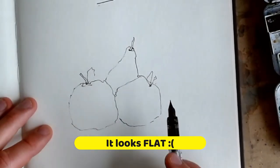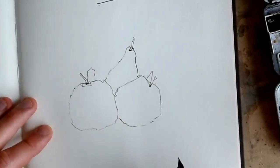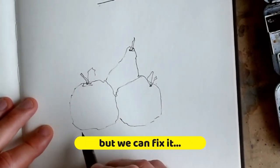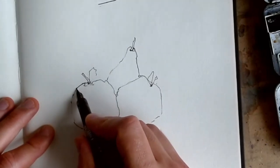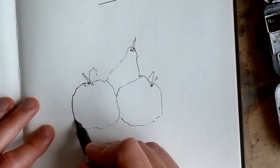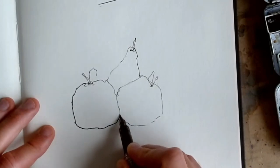Everything kind of looks on the same plane, it's kind of floating. So what happens if we go in and make some things a bit heavier? So we could go around this whole apple, this one's in front isn't it, and we can make that heavier.